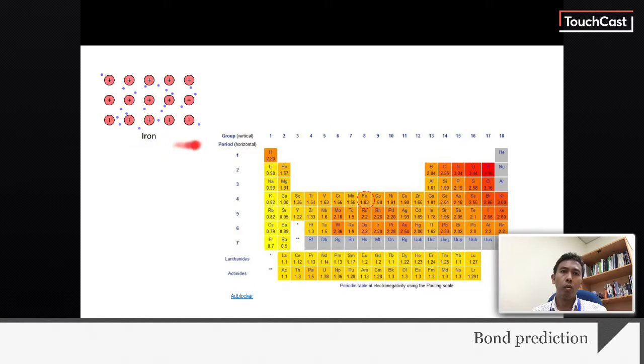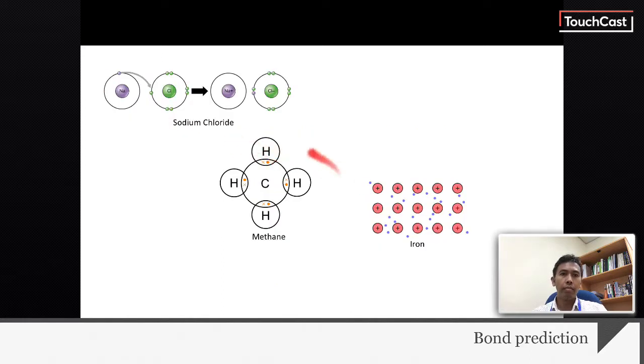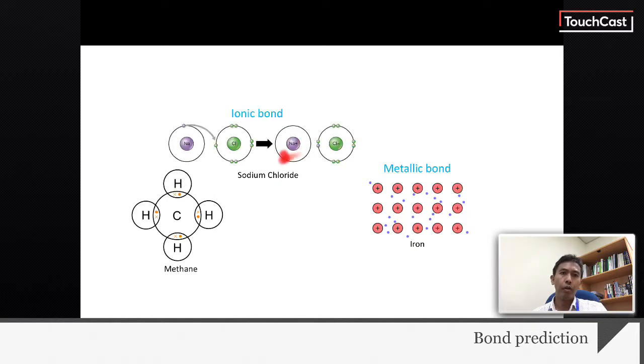Pure iron has low electronegativity, which is 1.83. It is metallic bond. From the three examples, we have concluded that atoms with lower electronegativity form metallic bonds. If a pair, one is lower electronegativity and one is higher electronegativity, it tends to form ionic bonds.